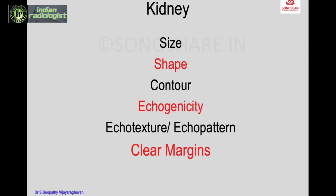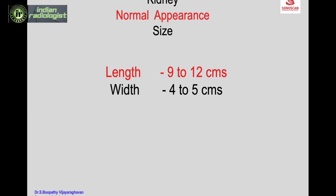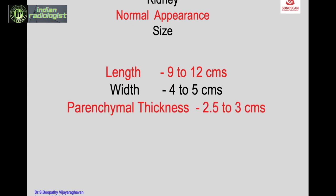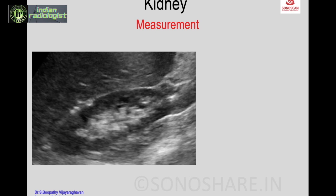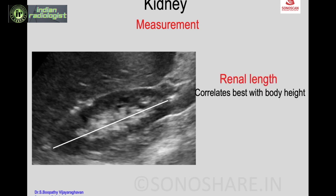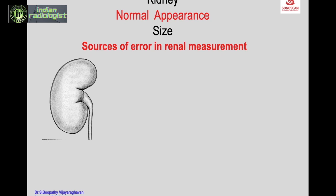Normal parameters of the kidney: the length varies from 9 to 12 centimeters, width 4 to 5 centimeters, and parenchymal thickness 2.5 to 3 centimeters. The left kidney is slightly larger than the right. The renal length correlates best with body weight, decreases with advancing age, is lesser in females, varies somewhat with hydration state, and shows a slight increase during pregnancy.